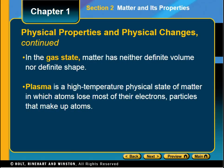A gas state has no definite volume and no definite shape. The gas will take on the shape of the container — if you put the gas into a balloon it'll be round, and if you put the gas into a room it'll fill up and take the shape of the room. The volume changes depending on the container, so the same amount of gas in a small balloon might be one liter, or if put into a room it might be 100 liters. Plasma is defined as a high-temperature physical state of matter in which atoms lose most of their electrons and the particles that make up the atoms.